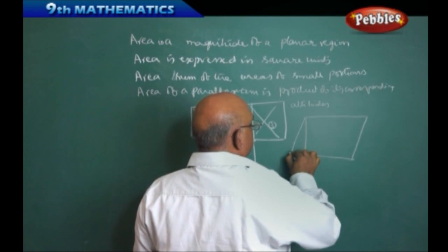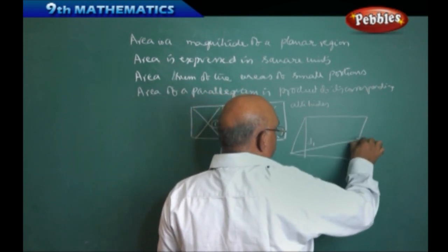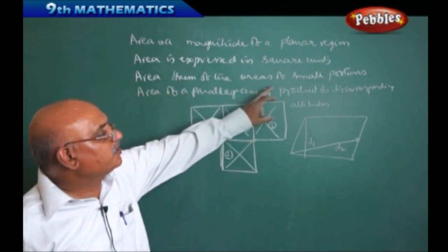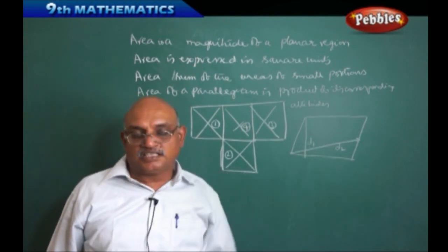This is one altitude. Let us call it as, this is D1. This is D2. Therefore, it is area of a parallelogram is always the product of the corresponding altitudes. That is D1 as well as D2.